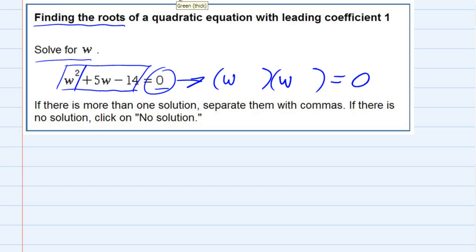But now to figure out what goes behind those w's, I need numbers that multiply to be negative 14, but add up to the positive 5w. So multiply to be negative 14, that means either a 1 and a 14, or a 2 and a 7. The signs have to be different in order to multiply and get a negative 14, but they also have to add up to a positive 5.